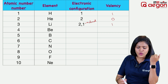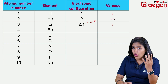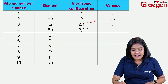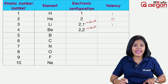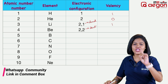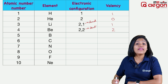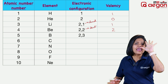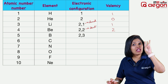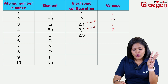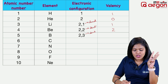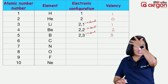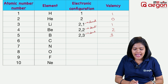Atomic number 4 — beryllium. The electronic configuration is 2, 2. We will donate these 2 electrons, so the valency is 2. Atomic number 5 — boron. The electronic configuration is 2, 3. These 3 electrons are donated. The valency of boron is 3.